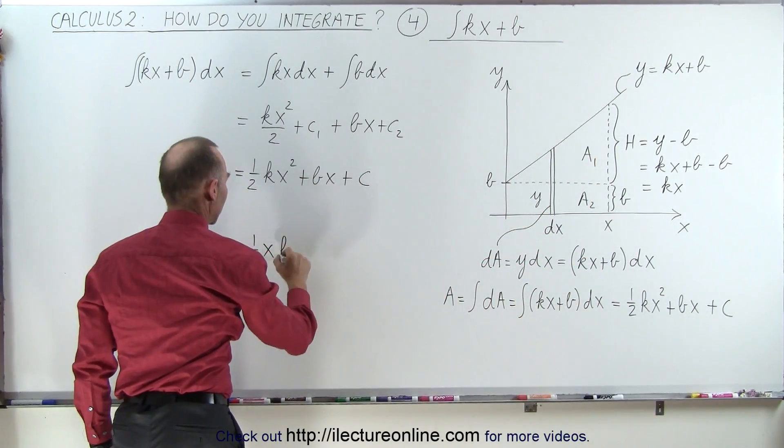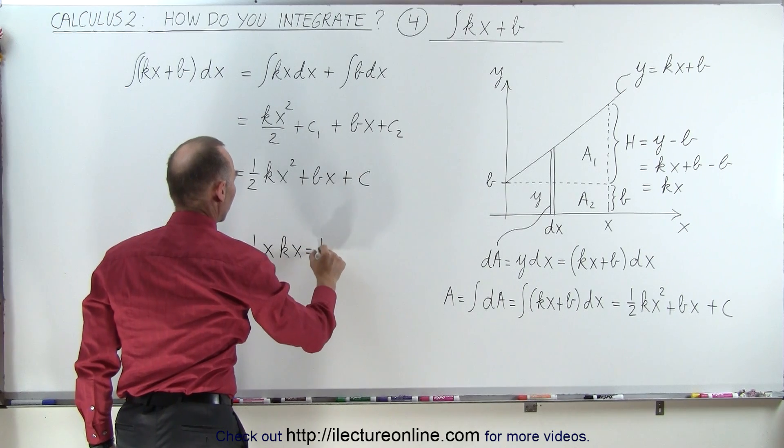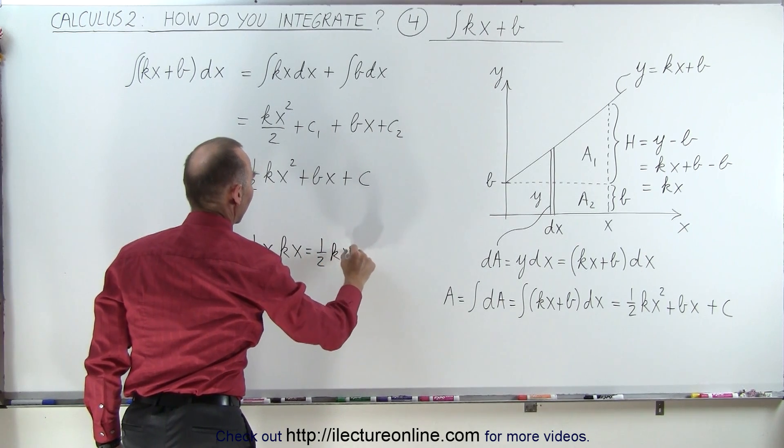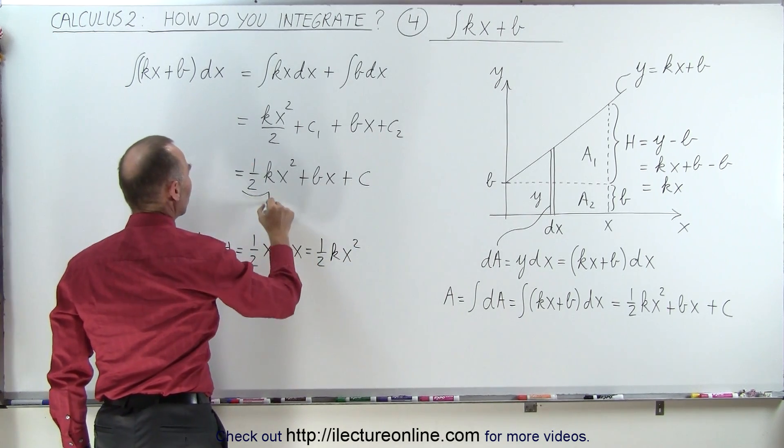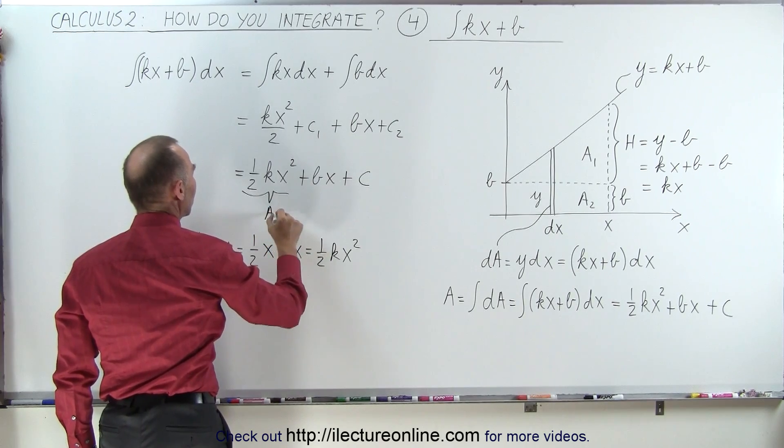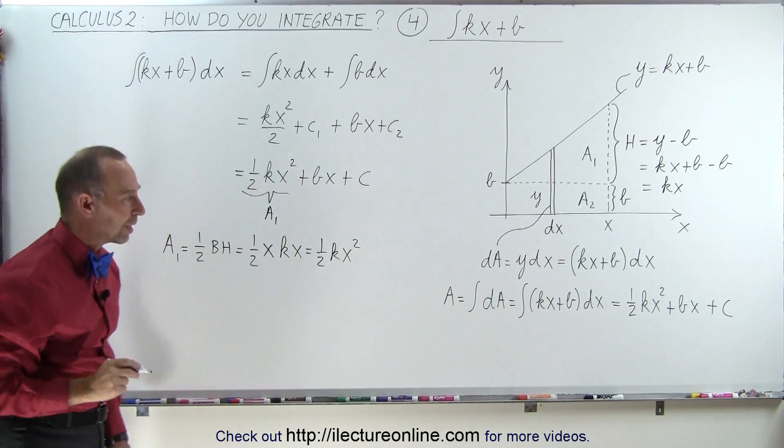And here the height of my rectangle is equal to b. So that goes in here, k times x, which is equal to one-half kx squared, which means this portion of the integral represents the area of that triangle.